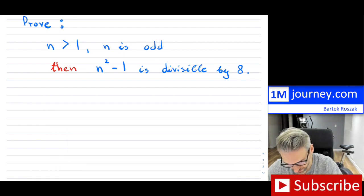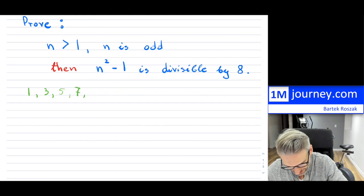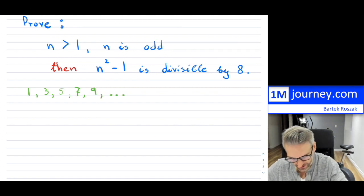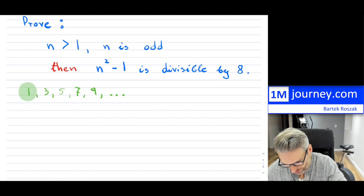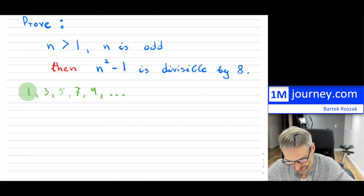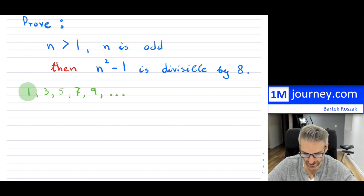Odd numbers are 1, 3, 5, 7, 9, and so on. So I think you can see the pattern there. Now we're going to be omitting 1, so this is greater than 1. So that means it's 3, 5, 7, 9, et cetera.